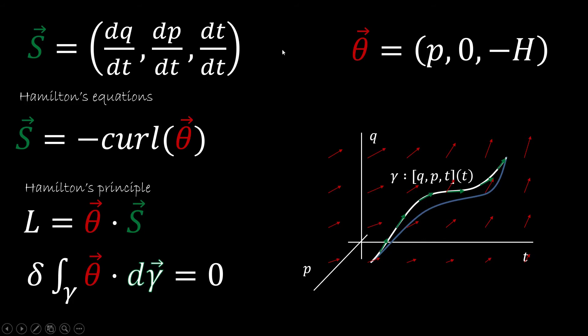So we can summarize that we have S. We have a vector field called theta, and S is the curl of minus theta. It's minus the curl of theta. So the Lagrangian is S with a scalar product with minus its vector potential. And now one remains to understand why do we have that the integral of the vector potential is stationary along the trajectories.